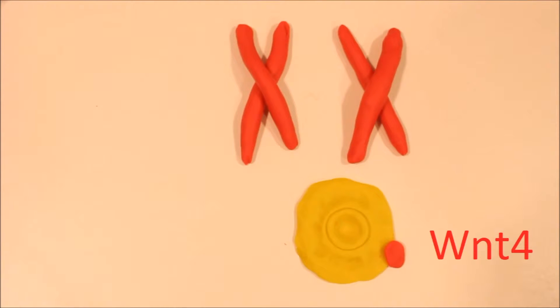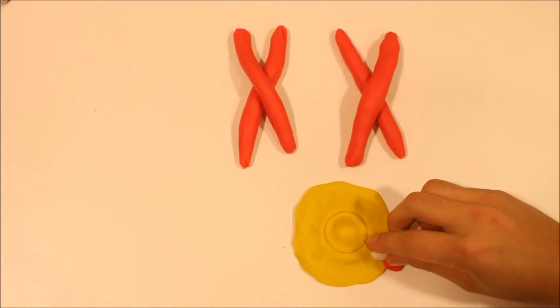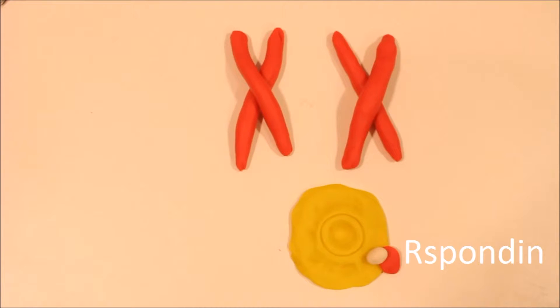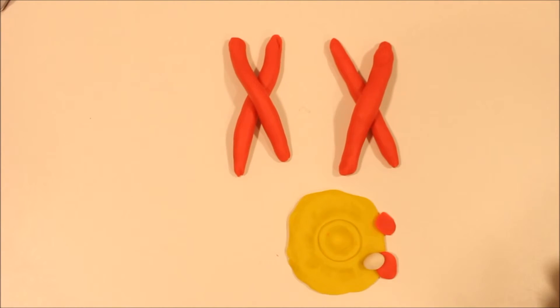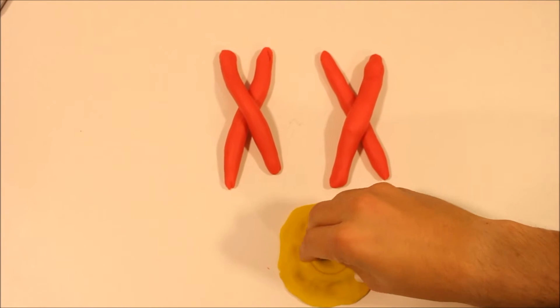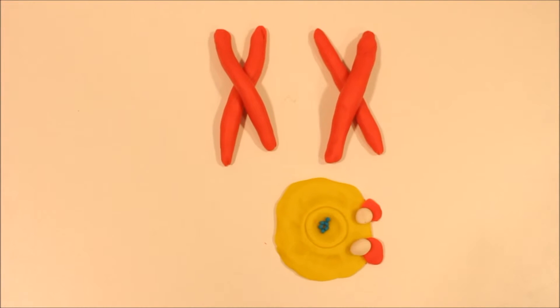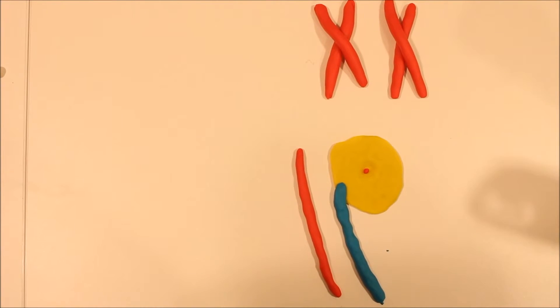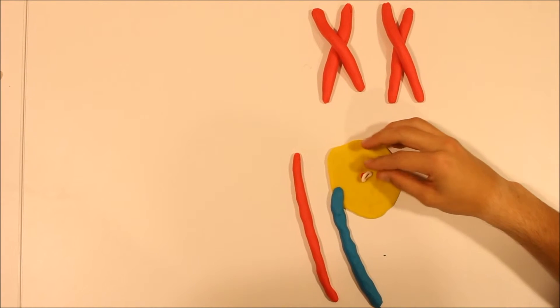At the cell level, certain signaling molecules are needed to initiate the pathways for the development of the ovaries. Here, WNT4 in red and R-spondin1 in white are both needed to increase beta-catenin in the cell, which activates the ovarian pathway.